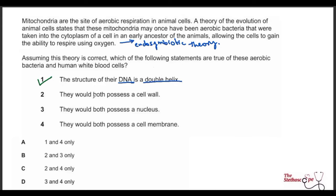Statement two: both possess a cell wall — bacteria do have a cell wall but animal cells, including human white blood cells, do not — incorrect. Statement three: both possess a nucleus — human cells have nuclei, but bacteria have their DNA looped naked in the cytoplasm with no nucleus — incorrect. Statement four: both possess a cell membrane — yes, all living organisms have a cell membrane to transport and communicate with their environment — correct. The answer is option A: statements one and four only.